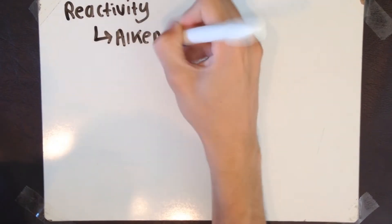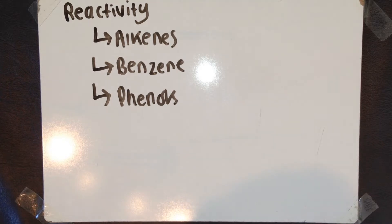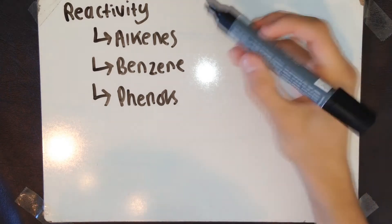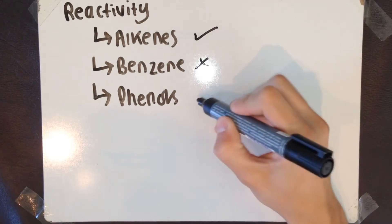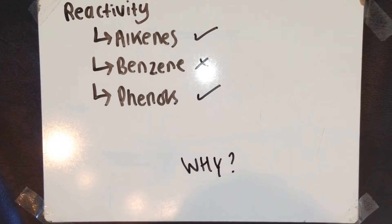In today's video, I'm going to talk about the difference in reactivity between alkene, benzene, and phenyl. The main thing I'm going to talk about is reacting with bromine. Alkenes can do this, benzene cannot, and phenyls can. But why is this that these two can, but benzene can't?